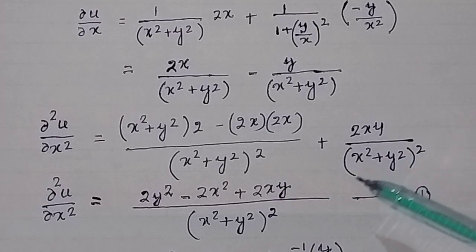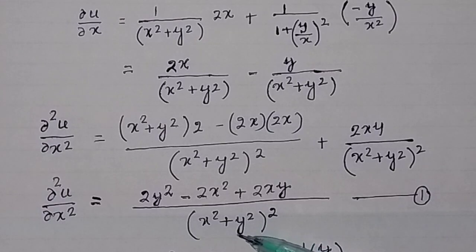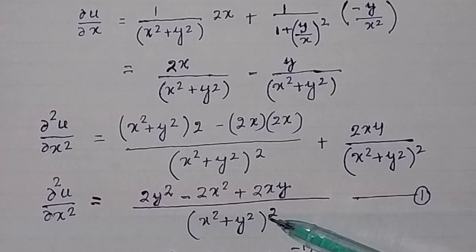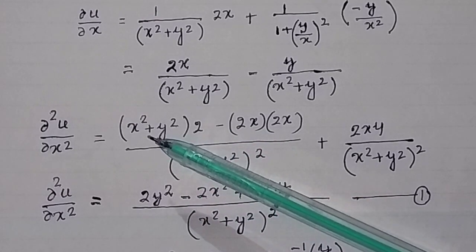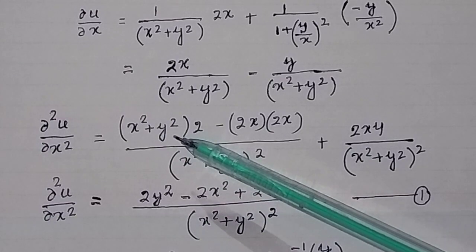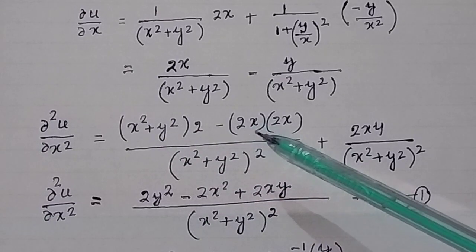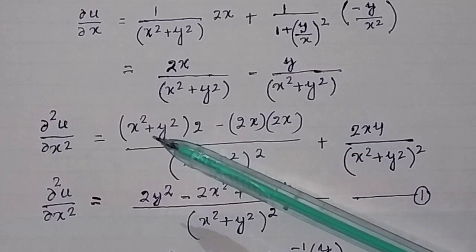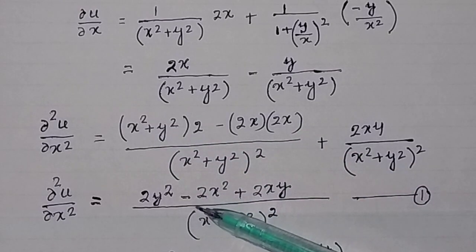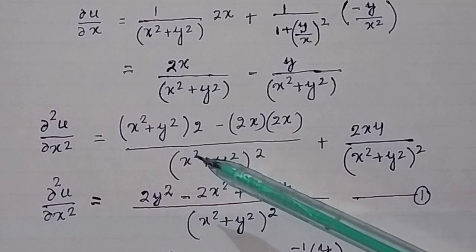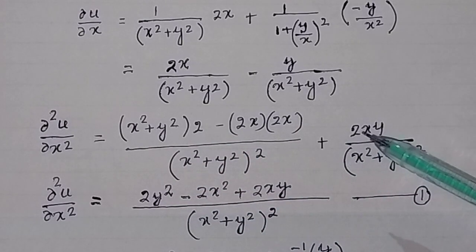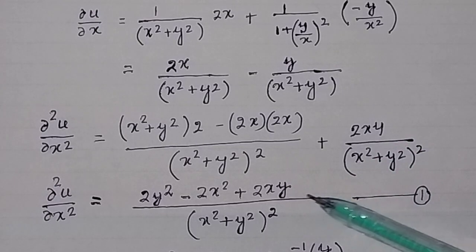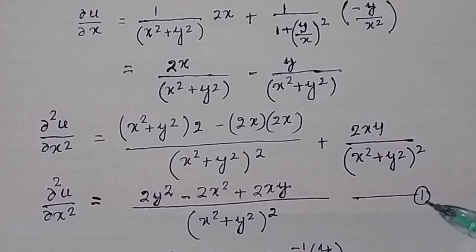Solving this, in the denominator we have (x² + y²)² and in the numerator we have 2x² + 2y² − 4x². So −4x² + 2x² equals −2x², and we also have 2y² plus 2xy. This is equation 1, the second order partial derivative of u with respect to x.